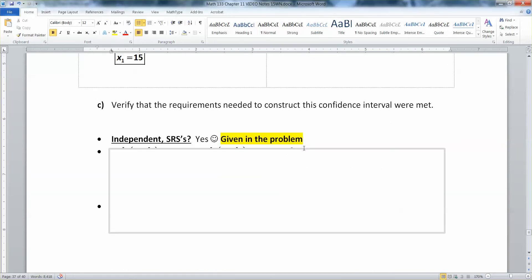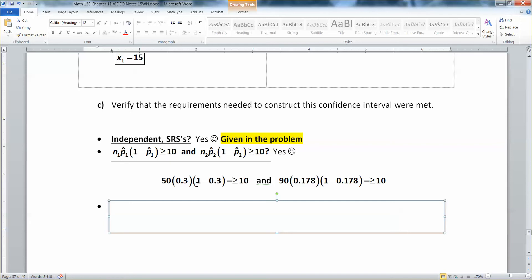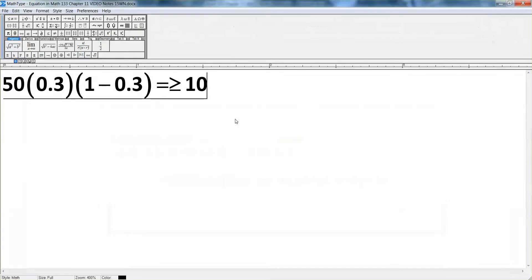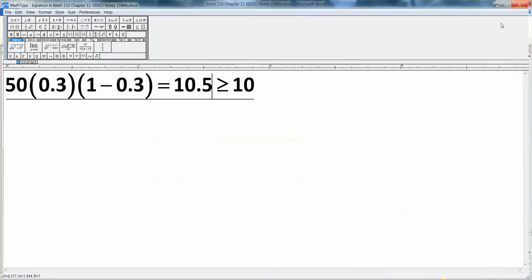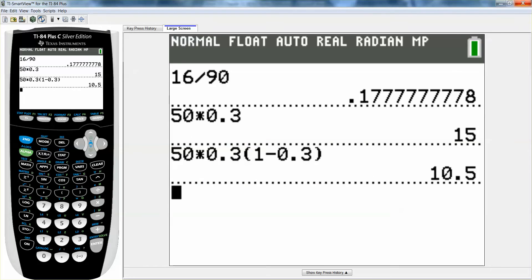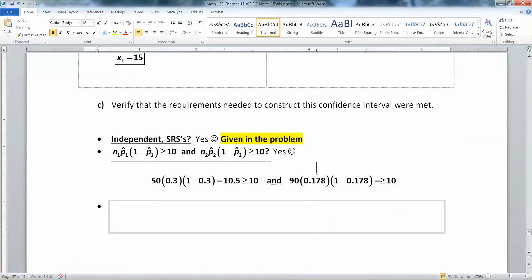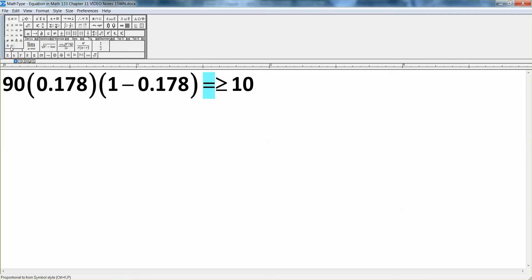Then we need N times P times 1 minus P to be greater than 10 for both groups. So we are going to have to check that. N1 was 50, so I need 50 times 0.3 times 1 minus 0.3. So 50 times 0.3, parenthesis 1 minus 0.3, gives 10.5. So just barely on that one, but it is in fact bigger than or equal to 10, so we're good. And then 90 times 0.17777, times parenthesis 1 minus 0.17777, I'll get about 13.2. And 13.2 is in fact bigger than 10, so we're good.